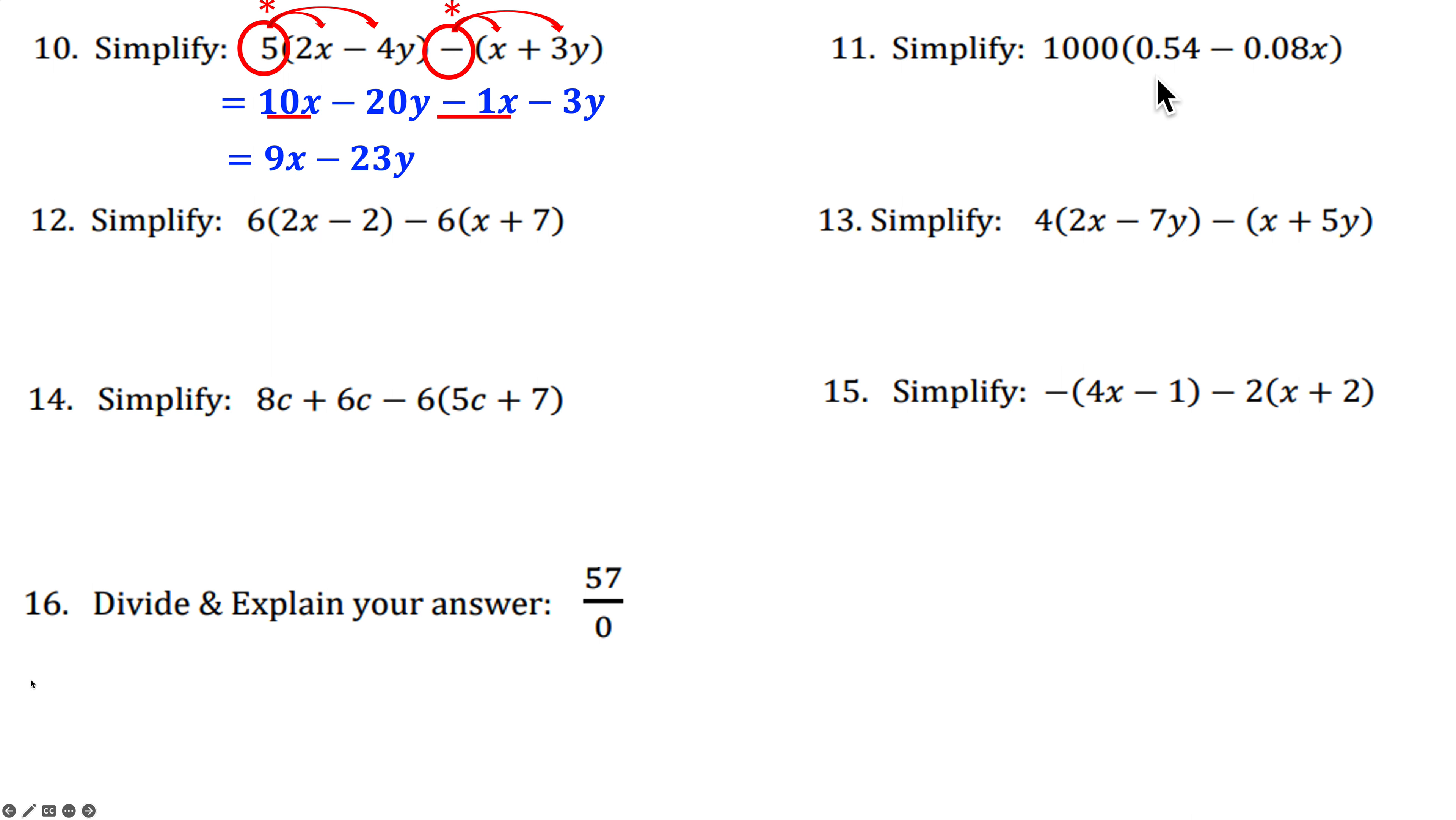Number 11. Distribute a thousand. Multiply it to both these numbers. So remember here, this is a multiple of 10, 3 zeros. Move the decimal point 3 places to the right. 540, 1, 2, 3, 80X.